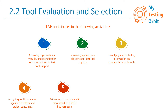The cost-benefit ratio is used to determine the expected financial returns and profitability of a tool or project, because that's what stakeholders will be interested in — what will be the return for the company or project from the automation tool license they will be buying.